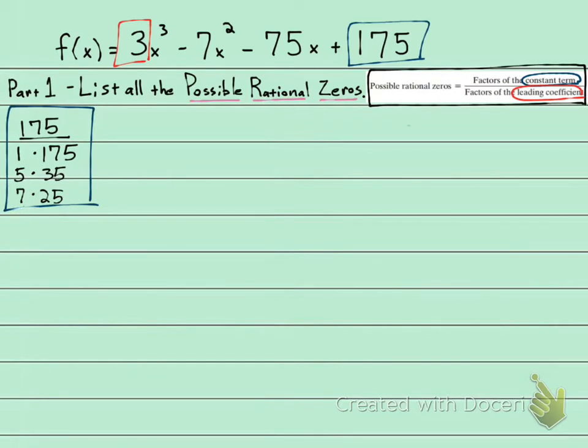It's pretty easy to find all the factors of 3 because they are only 1 and 3. So here are my factors of 3.